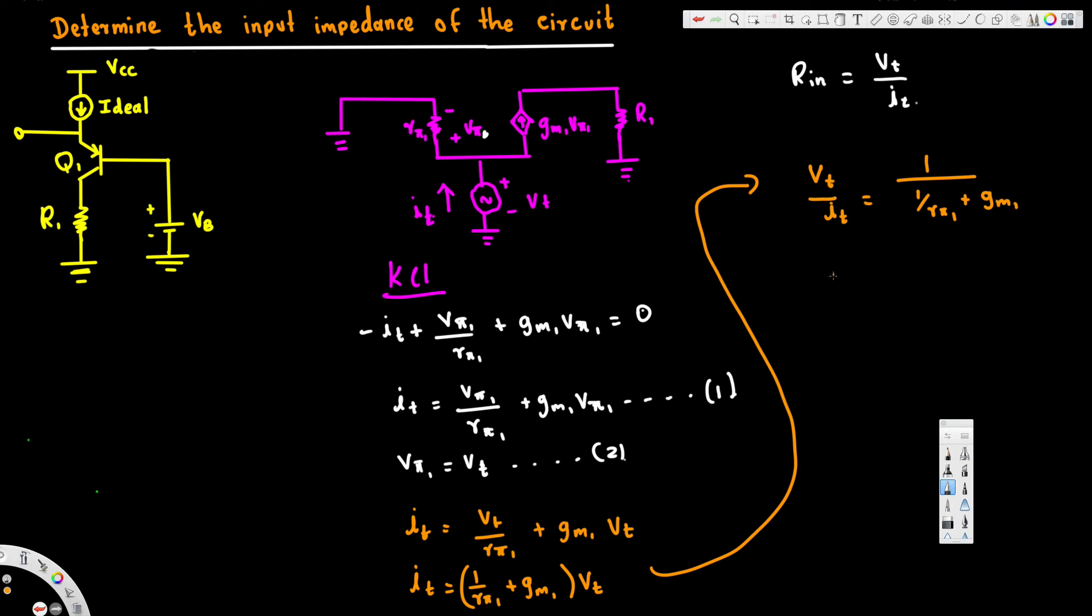Now vt over it is basically r input, input impedance. And here we can see that 1 over r51, if we have a resistance like this, it means parallel, so we can directly write r51 parallel.